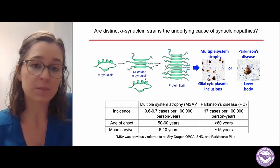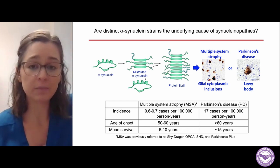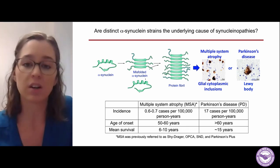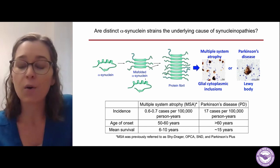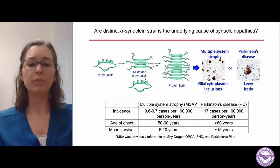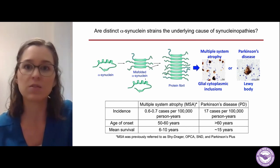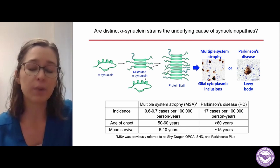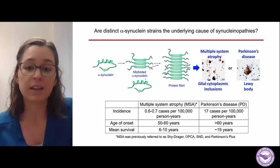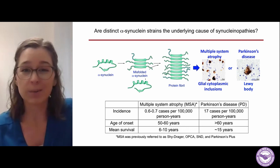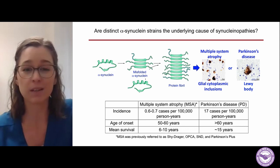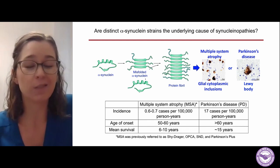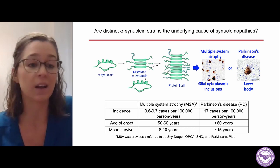We think this occurs by cellular alpha-synuclein in the brain misfolding into a stacked beta sheet structure that can form a fibril and aggregate, and then deposit in multiple system atrophy as glial cytoplasmic inclusions, or as Lewy bodies seen in Parkinson's disease. We already have some data suggesting these two diseases are differentiable in patients, including the incidence of disease — Parkinson's is more common than MSA — the age of onset, with Parkinson's patients typically diagnosed later in life, and differing mean survival.